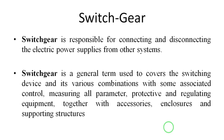Switchgear consists of three parts: a controlling part, a protecting part, and a switching part. The combination of these three parts is called switchgear. For example, in any industry there is a switching system, a controlling system, and also a protecting system. The switching part means we have switches to operate — that is, to turn apparatus on and off.